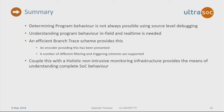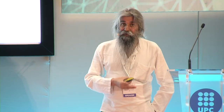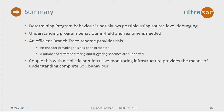In summary, determining program behavior is not always possible using source-level debugging, especially in real-time things. Understanding program behavior is important, even though the system matters overall — but software running and programs do too. An efficient branch trace scheme helps provide this visibility. We've given an example of this with a number of different filtering features so that you can control how much trace comes off chip. If you couple this with a holistic debug and monitoring infrastructure, you get visibility and monitoring of quite complex SOCs.